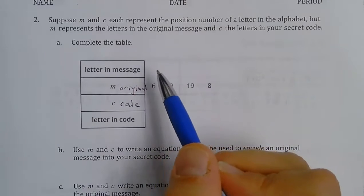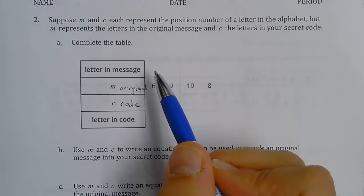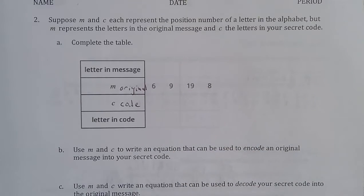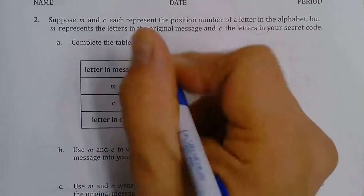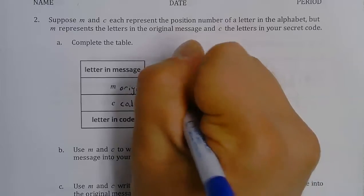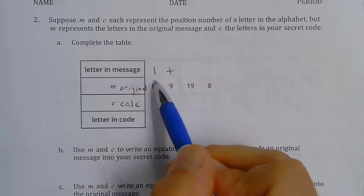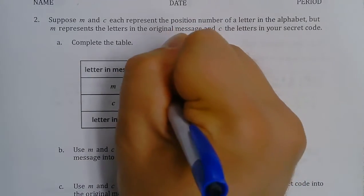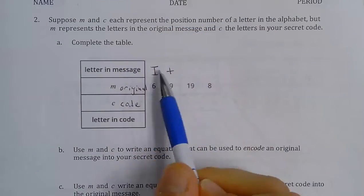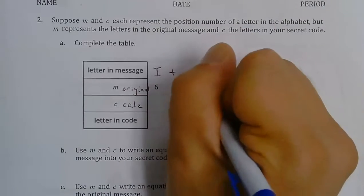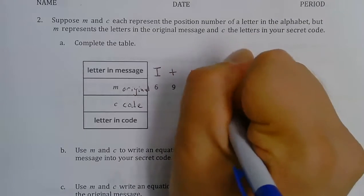So if we have letters in the message — if you remember, I had 'it is spring.' So I'm going to put I and then T, and then S and then P.